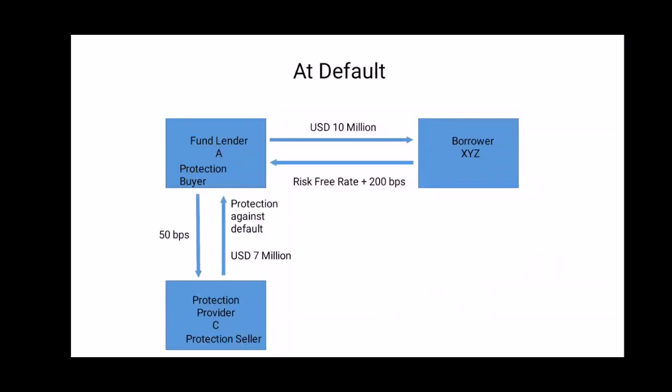Suppose there is a default and issuer XYZ is not able to pay the money. Then the fund house will approach protection provider C to recover the loss. The loss is whatever the fund house is unable to recover — whatever is recovered is deducted from the invested amount, and the remaining loss is paid by the protection provider. The recovery rate is the rate at which the investor is able to recover per dollar from the asset. Assuming a recovery rate of 30%, 3 million is recovered from the bond auction, and the protection provider is required to pay 7 million to the investor, fund house A.